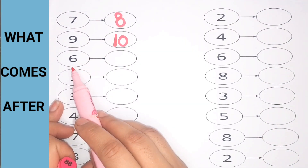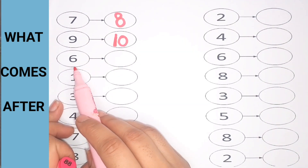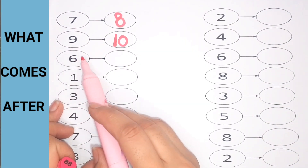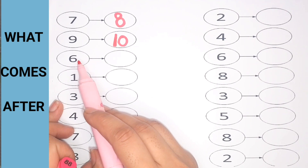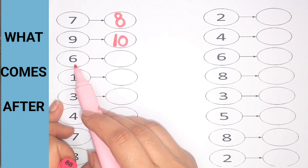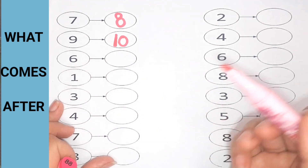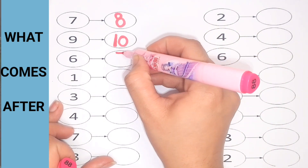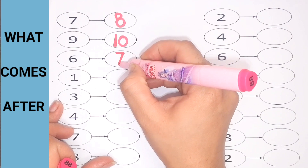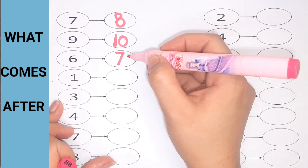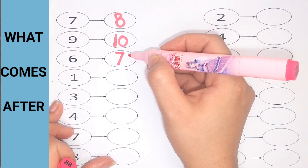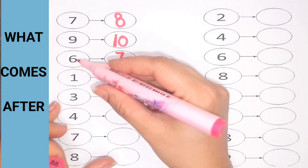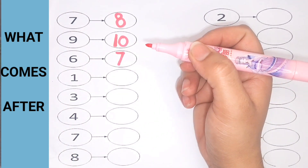Next is 6. What comes after 6? Can you guess? 7. The number 7 comes after 6.